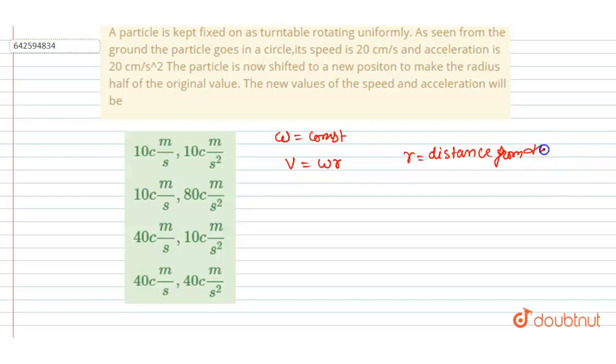Now, if the distance from the center becomes half, then velocity will also become half, right? Since the velocity is directly proportional to the radius, as the distance from the center is made half, it will become 10 centimeter per second.